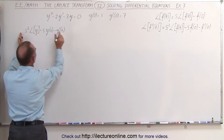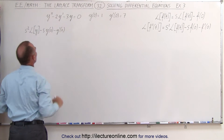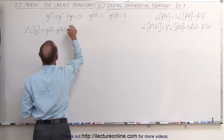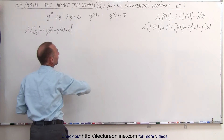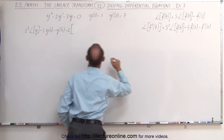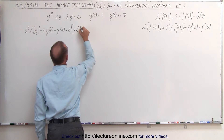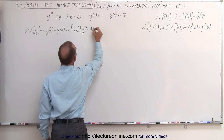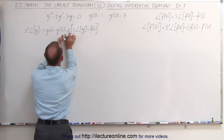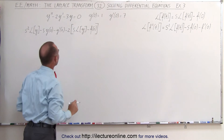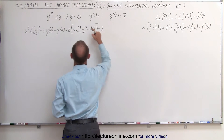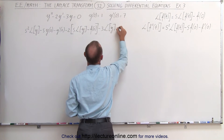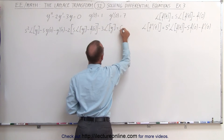This represents the Laplace transform of the second derivative of the function. Now we're going to take minus 2 times the Laplace transform of y prime, and that shows you over here how to do that. So we take s times the Laplace transform of the function, minus the function evaluated at 0. Notice that all of this is multiplied times minus 2. And finally, minus 3 times the Laplace transform of the function itself. That equals the Laplace transform of 0, which of course is 0.